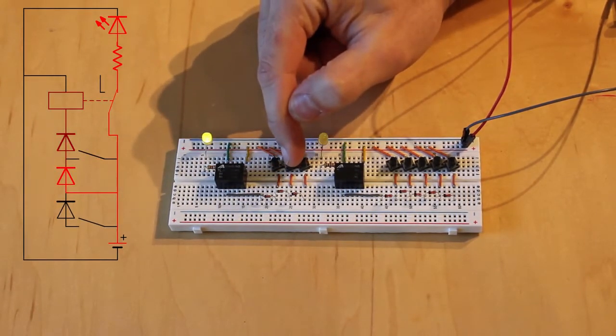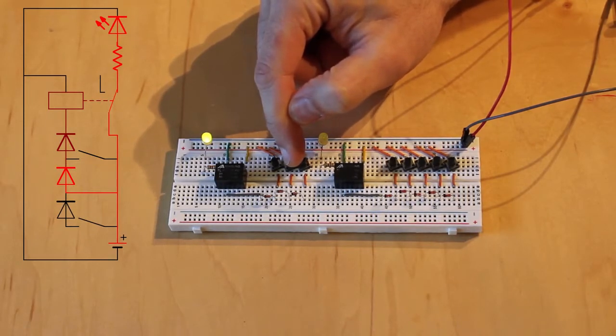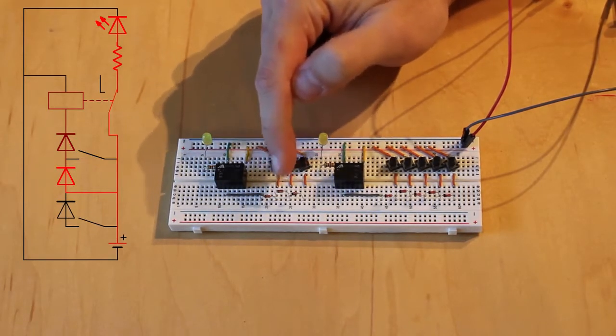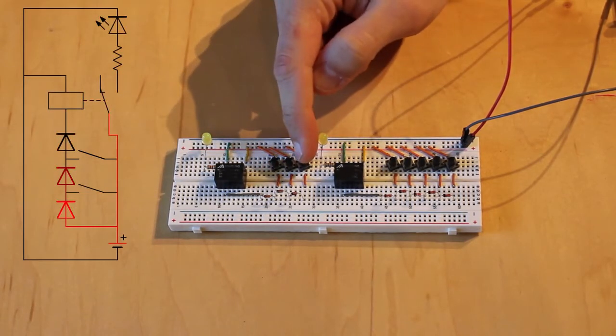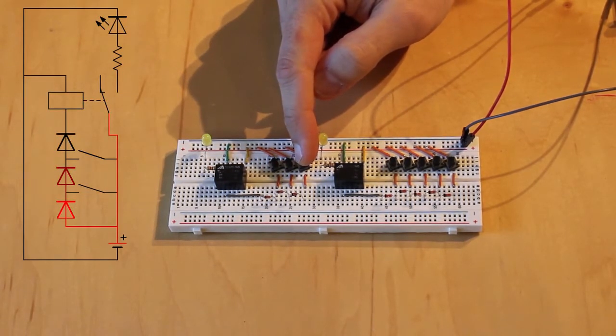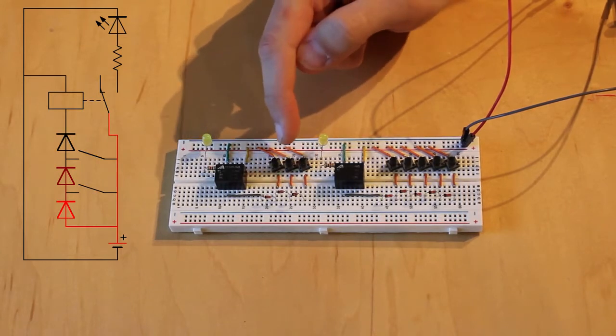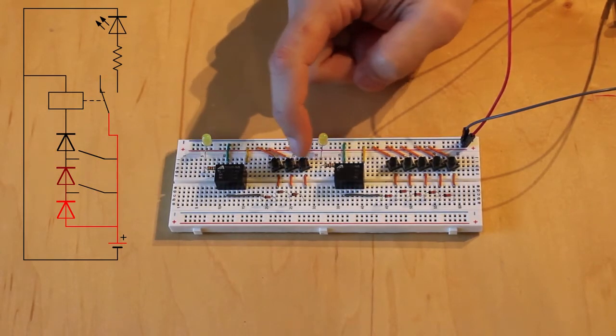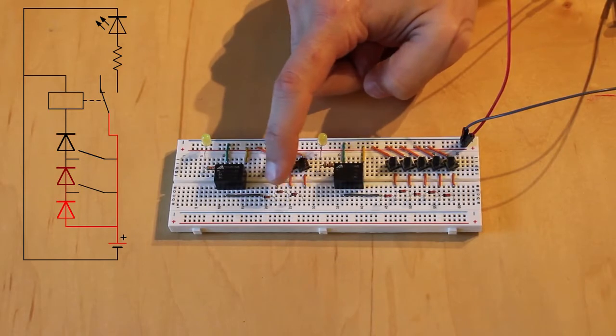So if I push the first button you can see that the yellow light comes on because 5 volts is flowing through the button through just one diode into the coil to energize it. Now if I push the middle button you can see that the light still comes on but now we're sending that 5 volts through two diodes. Now if I push this third button here you can see that the LED does not come on.